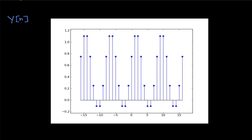Reconstructing y[n], it looks similar to the original square wave — it goes mostly positive when the square wave was 1 and close to 0 when the square wave was 0. However, the corners have been lost. This low-pass filter has knocked off the corners, which may or may not be the desired behavior, but it shows how the process works.